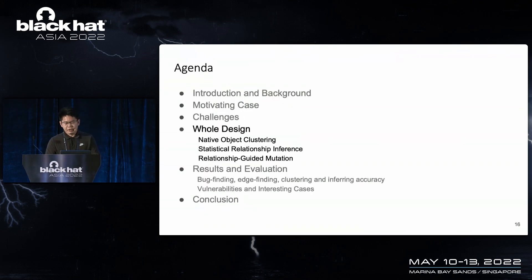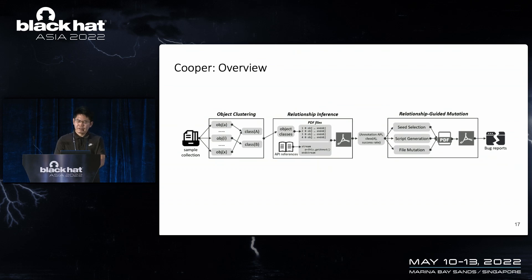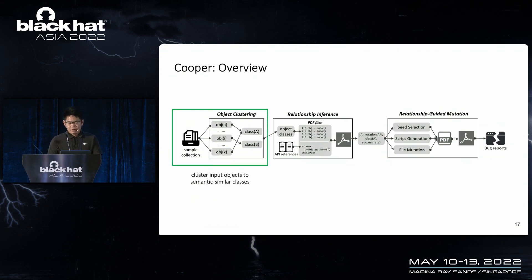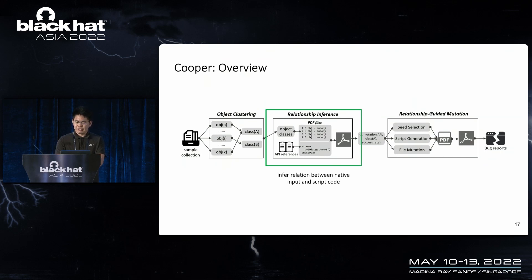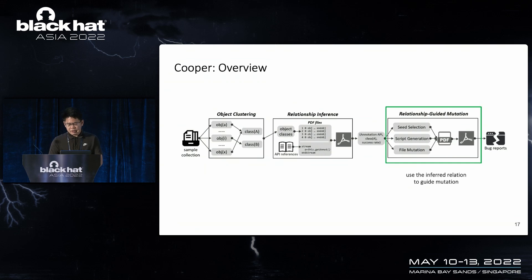This figure presents the overview of our solution, which has three components. The first component is object clustering, which clusters a large number of native objects into a small number of object classes according to their semantic features. Once we have the object classes, we infer the relationship between them and the scripting API — this is the purpose of the second component, relationship inference, which uses a statistical method. Finally, the third component is relationship-guided mutation, where we use the inferred relationship to guide mutation.